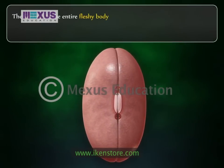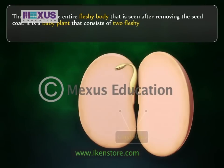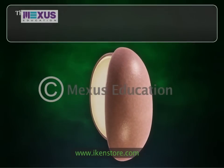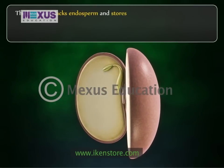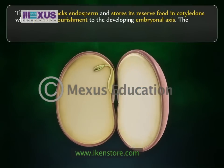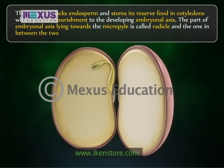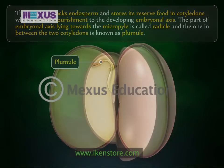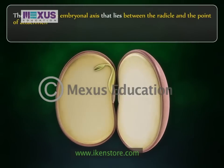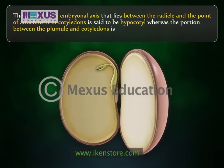The embryo is the entire fleshy body seen after removing the seed coat. It is a baby plant that consists of two fleshy cotyledons and a short axis to which the cotyledons remain attached laterally. The bean seed lacks endosperm and stores its reserve food in the cotyledons, which provide nourishment to the developing embryonal axis. The part of the embryonal axis lying towards the micropyle is called the radicle, and the one between the two cotyledons is the plumule. The region between the radicle and the point of attachment is the hypocotyl, whereas the portion between the plumule and the cotyledons is called the epicotyl.